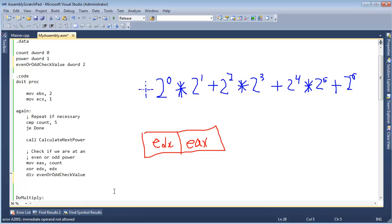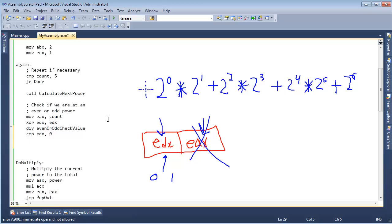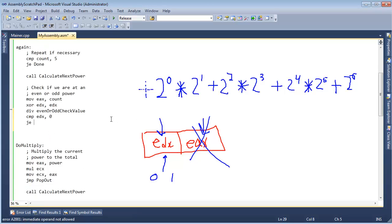So now I can say divide by even or odd check value. I will just paste that down there. And the answer will be placed in EAX. The remainder will be placed in EDX. I don't care what the answer is. I want to know if this is a 0 or a 1. If it is 0, that means 2 divided cleanly, thus we are at an even power of 2. But if it is a 1, then 2 did not divide cleanly and that means we are at an odd power of 2. Thus we need to do the multiply. So let's go right here and say compare EDX with 0. If it is 0, that means we need to do the addition. So jump equal to do add. Otherwise, at this line we know it wasn't equal so let's jump to do multiply.